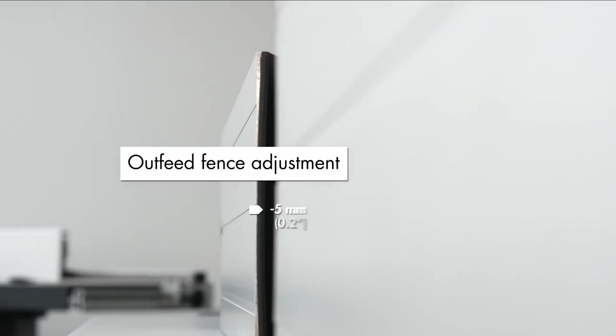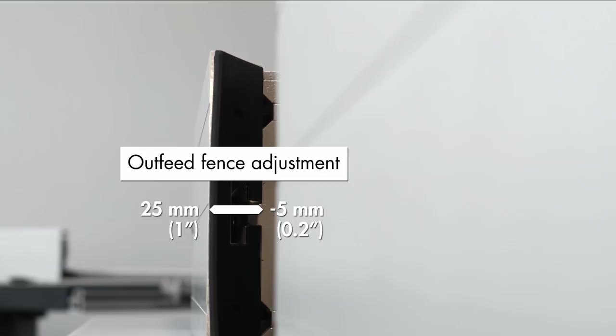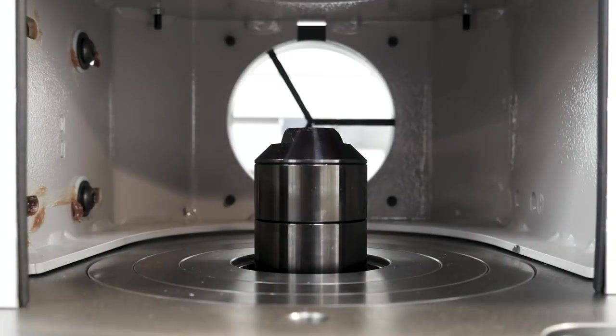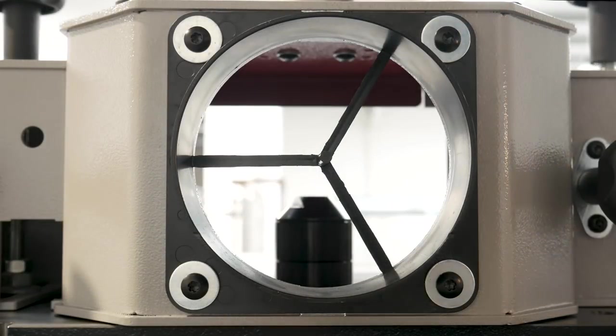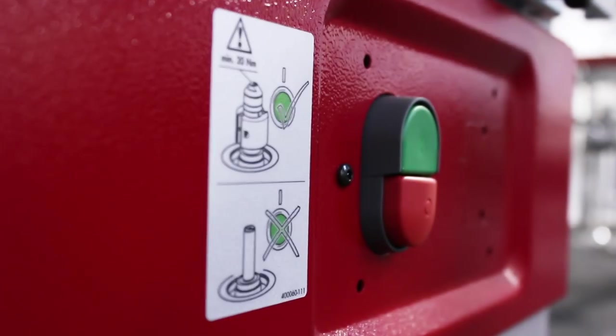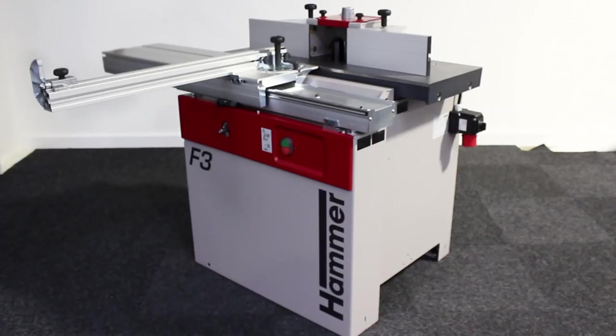The fence also features outfeed adjustment between minus 5 and 25 millimeters as well as efficient dust extraction with a 120 millimeter port to ensure your workspace remains dust free. Operating the spindle molder is made easy and precise using the anodized slot and tenoning table.